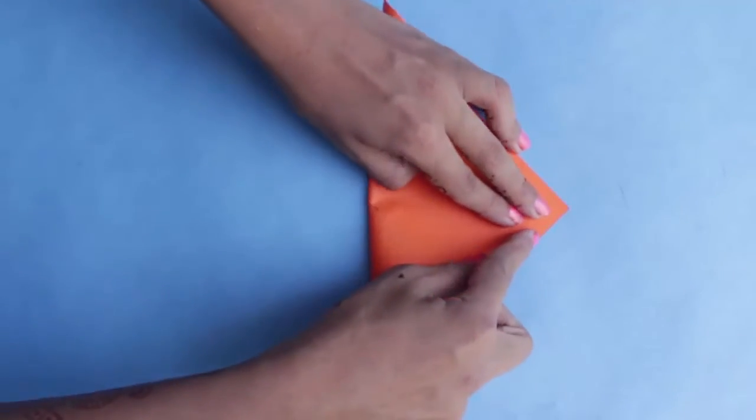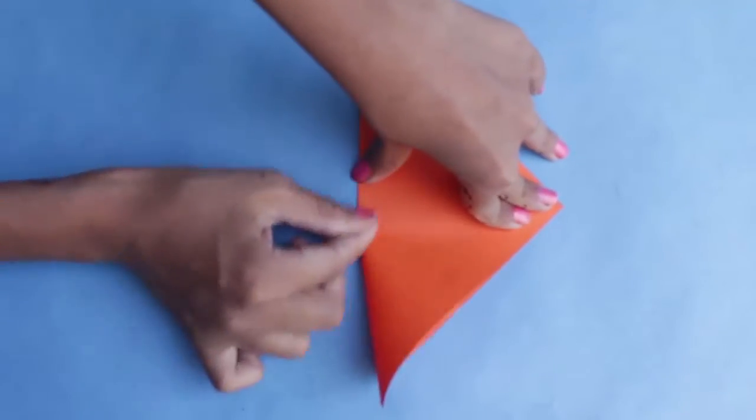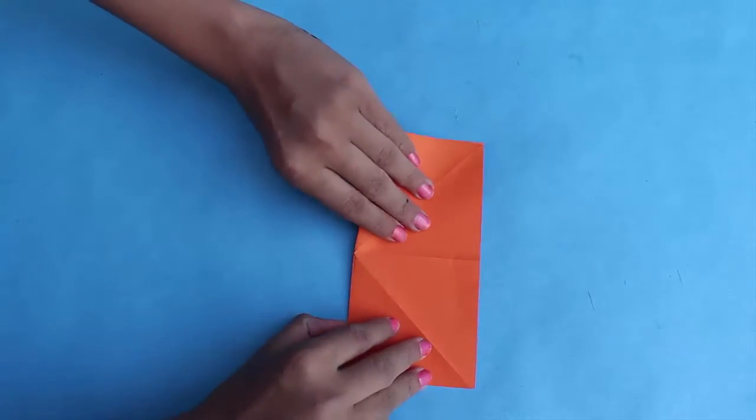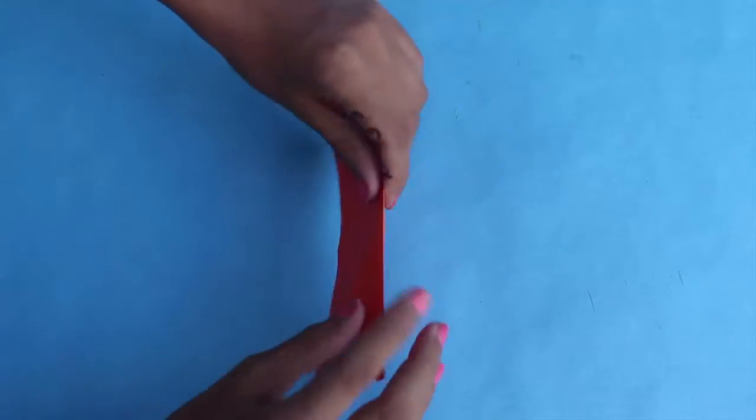Now fold both the diagonals. By using these basic folds, you have to make a triangular fold as shown.